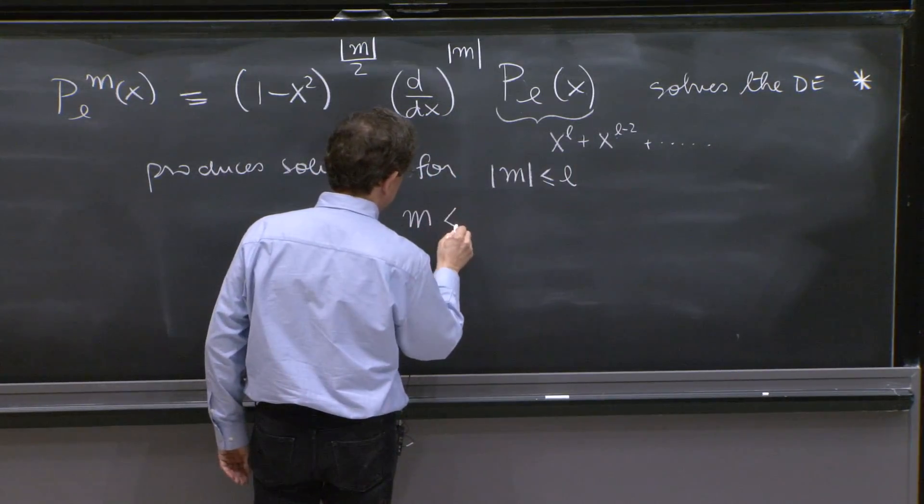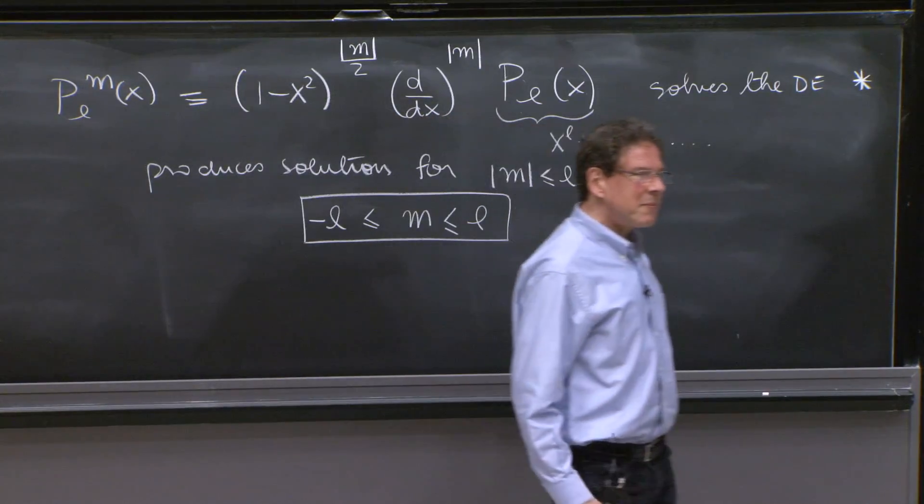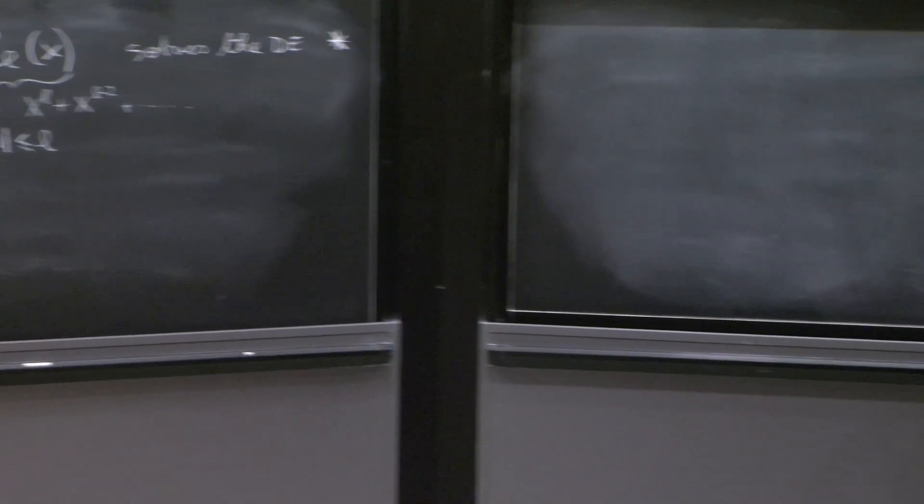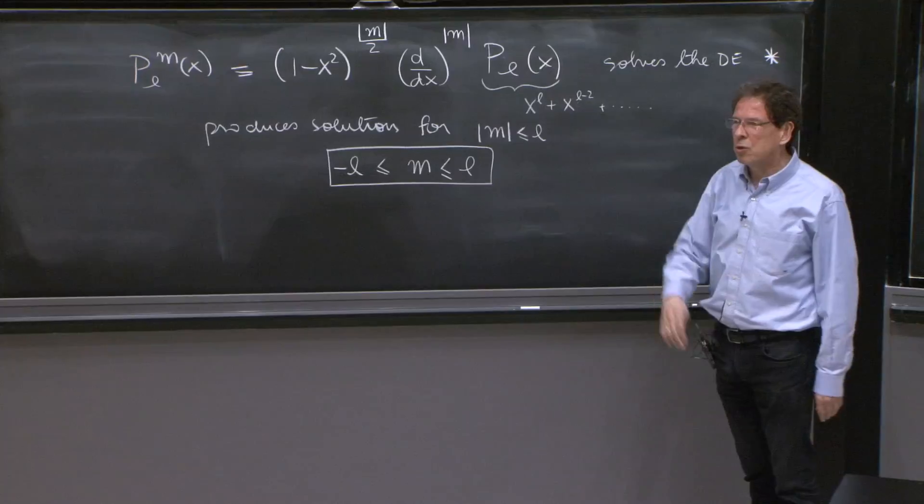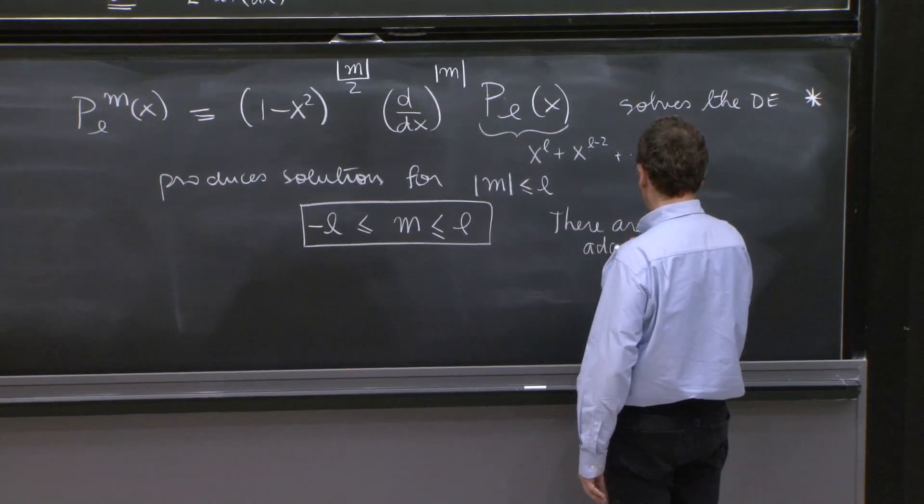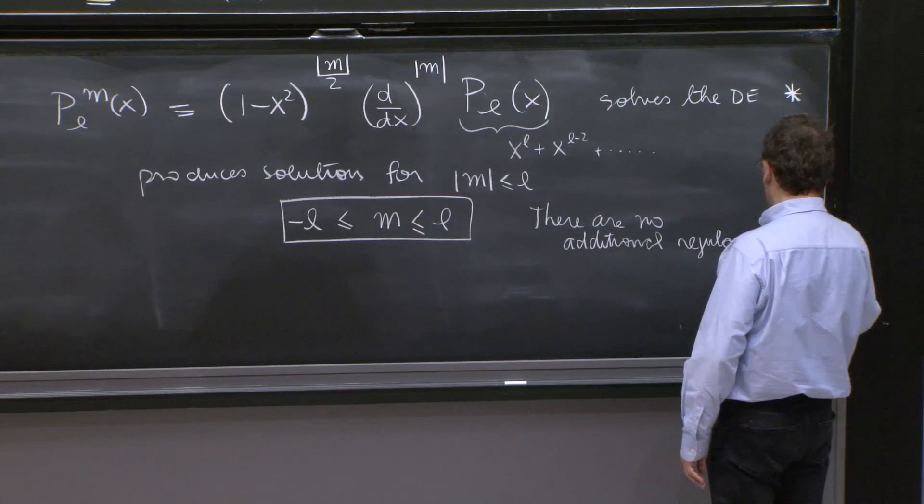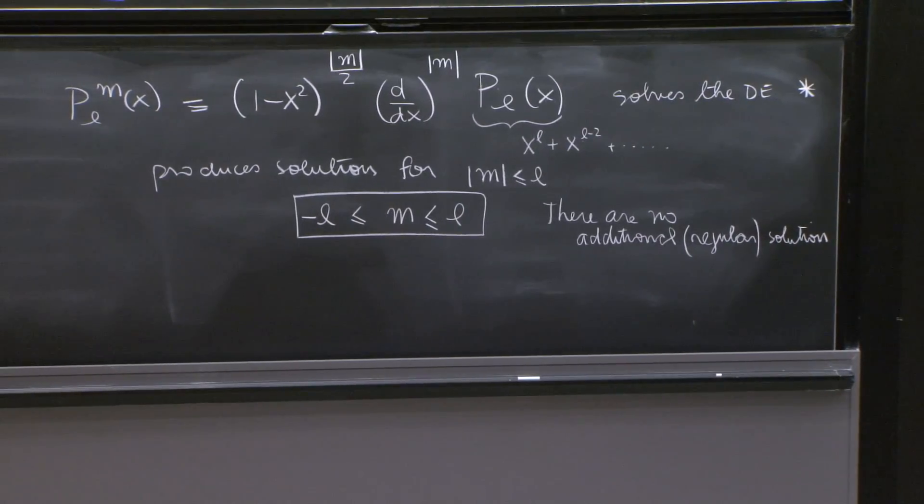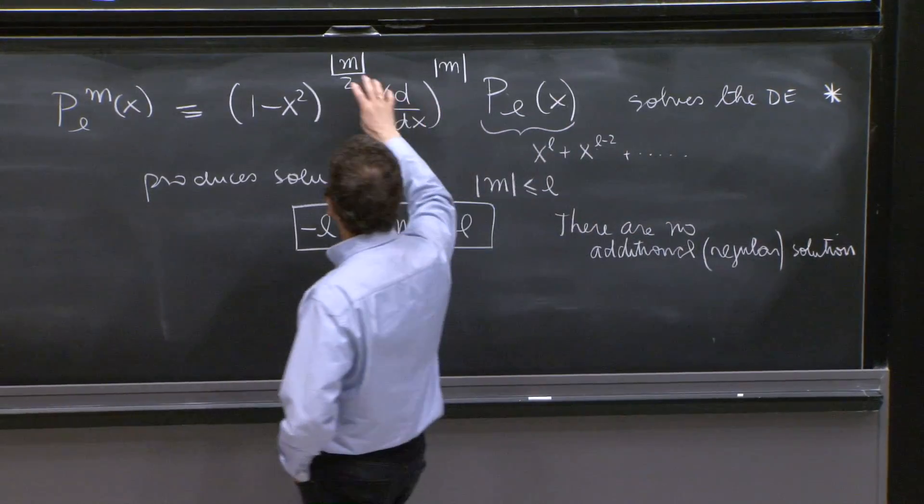This takes a little work to check. I will not check it. It's not all that important. The important thing to note here is that this provides solutions. Since this polynomial is like x to the l plus x to the l minus 2 plus coefficients, you can take at most m equal l derivatives. If you take more than l derivatives, you get 0. There's no great honor in finding 0 solutions on this equation. This produces solutions for absolute value of m less or equal to l, and therefore m in between l and minus l. But that's not all that happens. There's a little more. It's to show that there are no more solutions. It's a theorem that there are no more solutions, no additional regular solutions. It means solutions that don't diverge.